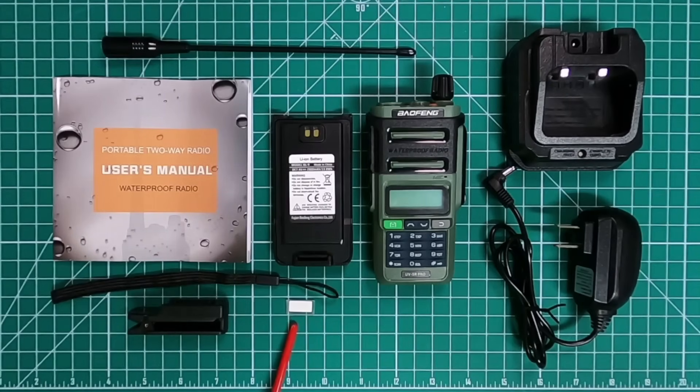And this little tag here, I guess you put your call sign on, and there's a little slot for it right here at the bottom of the radio. You get a 2800 milliamp hour battery and the radio itself.